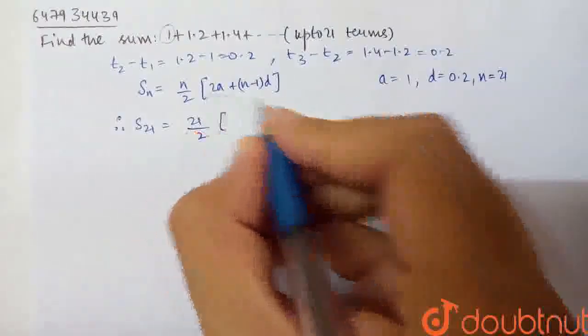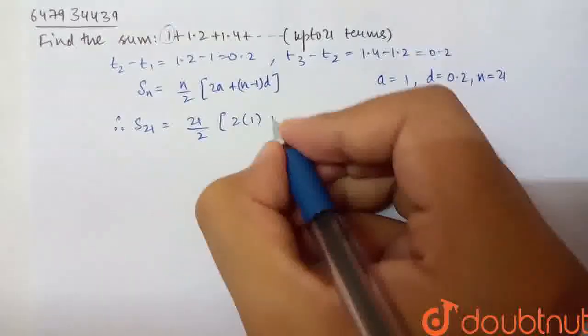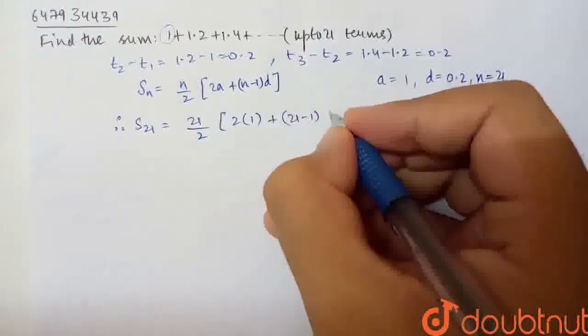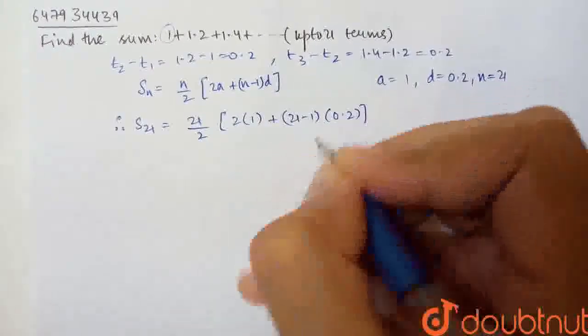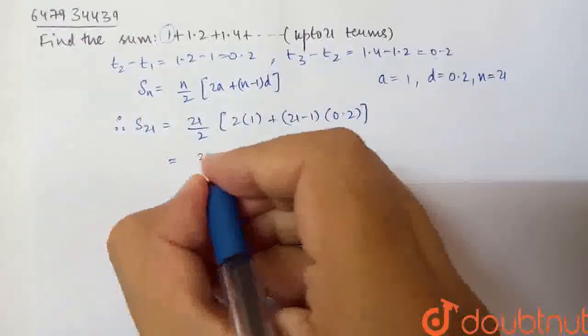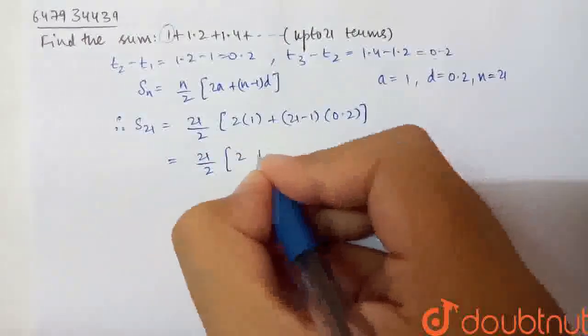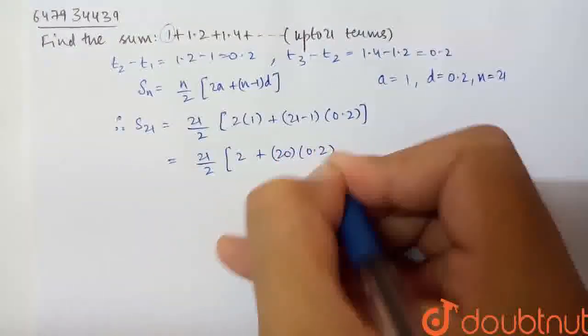So, S21 = 21/2 × [2a + (n-1)d] = 21/2 × [2×1 + (21-1)×0.2] = 21/2 × [2 + 20×0.2].